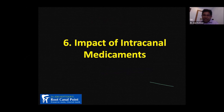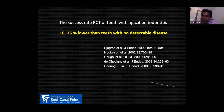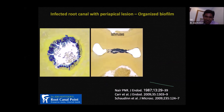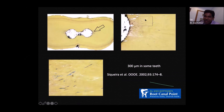The sixth is the impact of intracanal medicaments. The success rate of RCT of teeth with apical periodontitis is 10 to 25% lower than teeth with no detectable disease. Why? Because of biofilm — inside the primary canal, inside the isthmus, inside lateral canals, and even into the dentinal tubules. Various fluid dynamic studies have shown that when you activate irrigant with ultrasonic, the irrigant will go only about 2.5 micrometers into the dentinal tubules — whereas bacteria may enter 200 to 400 micrometers. That is why intracanal medicaments are important.